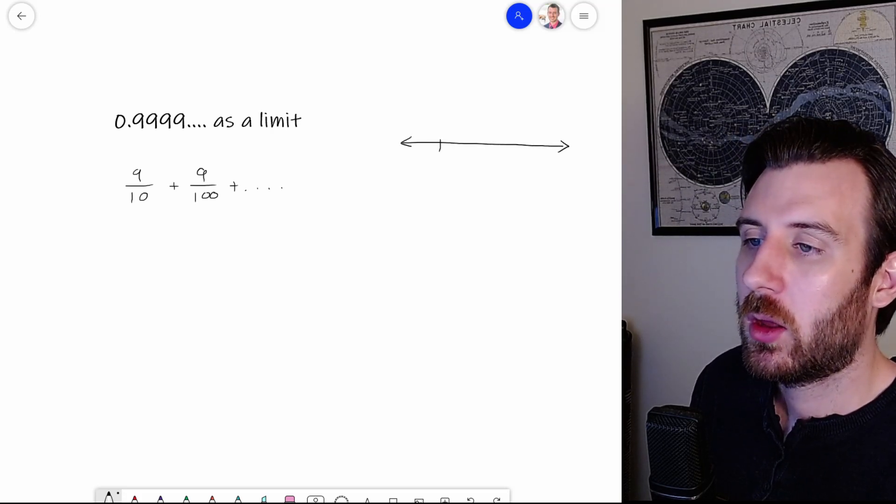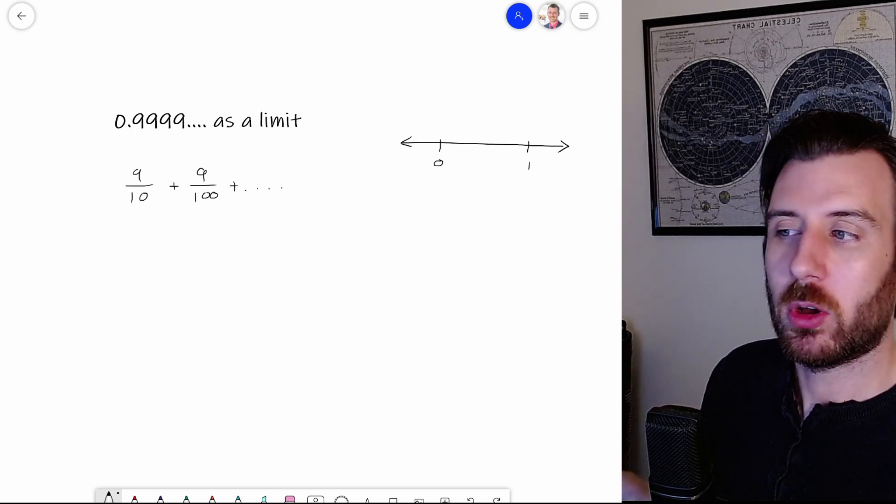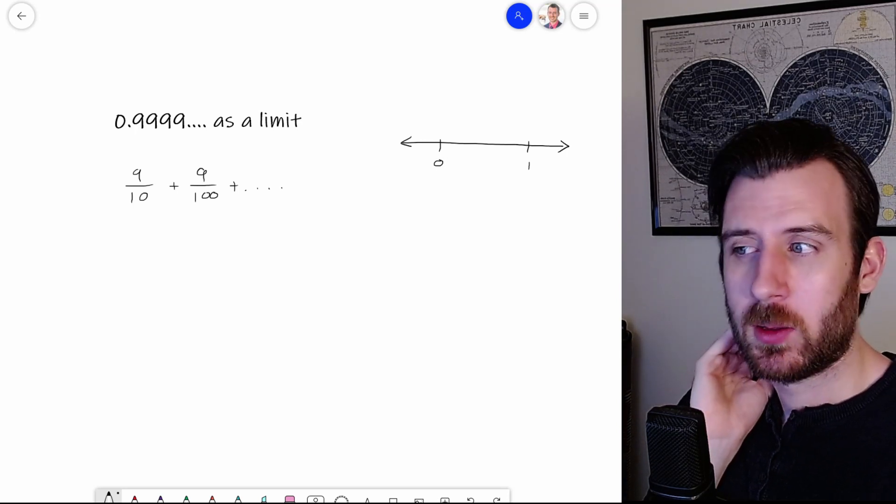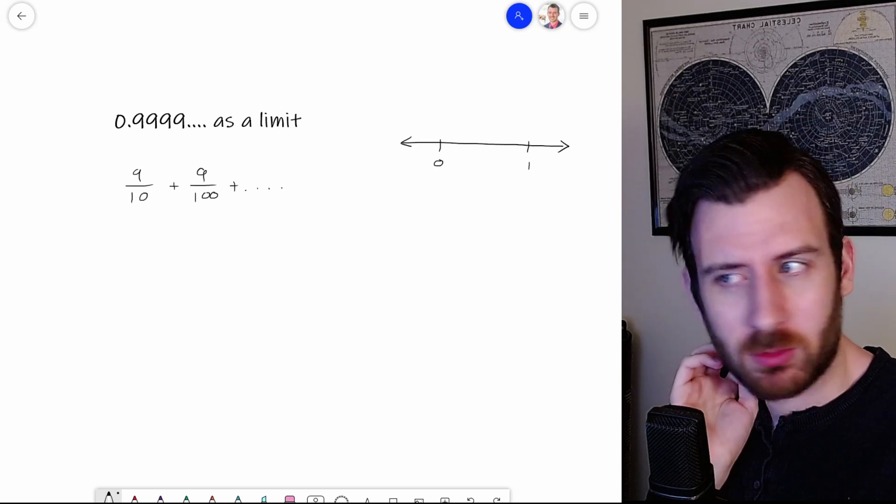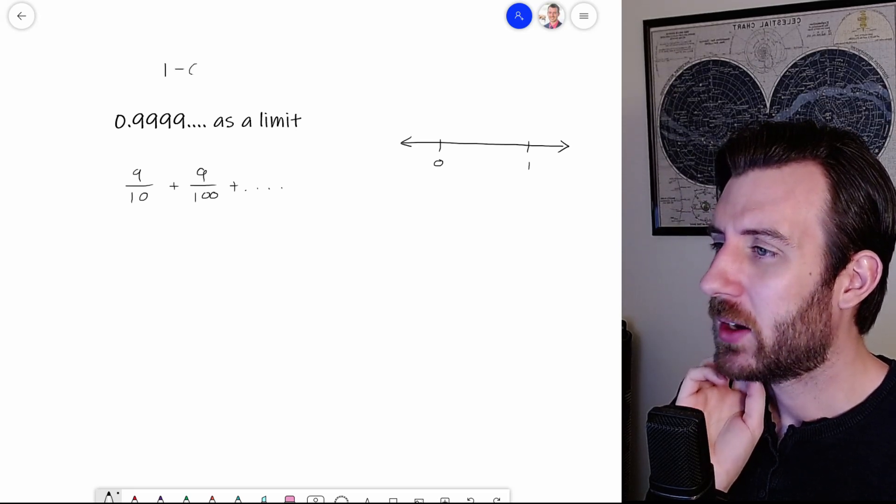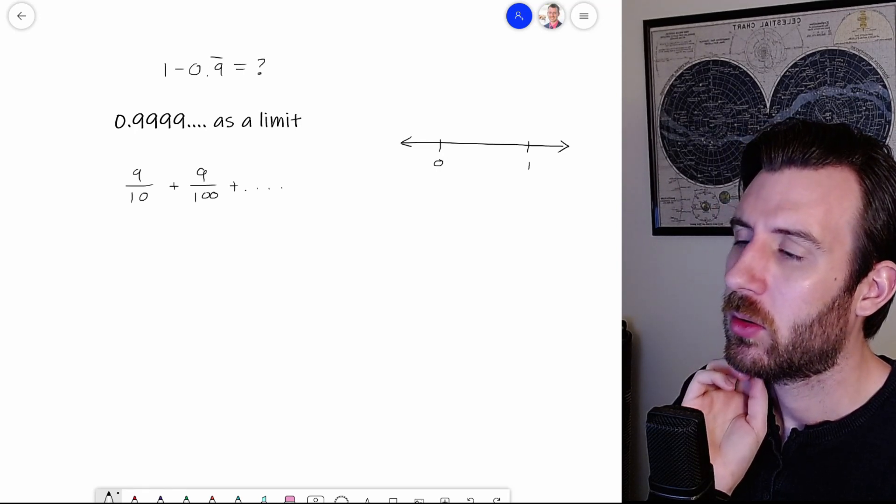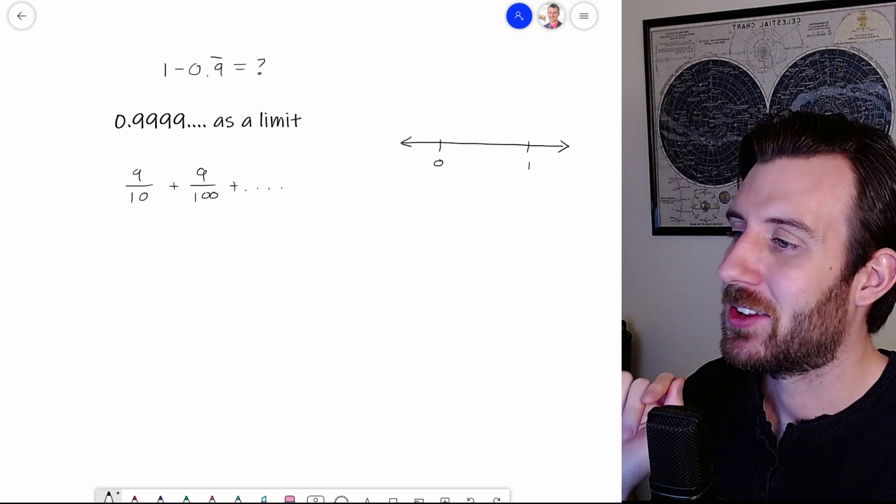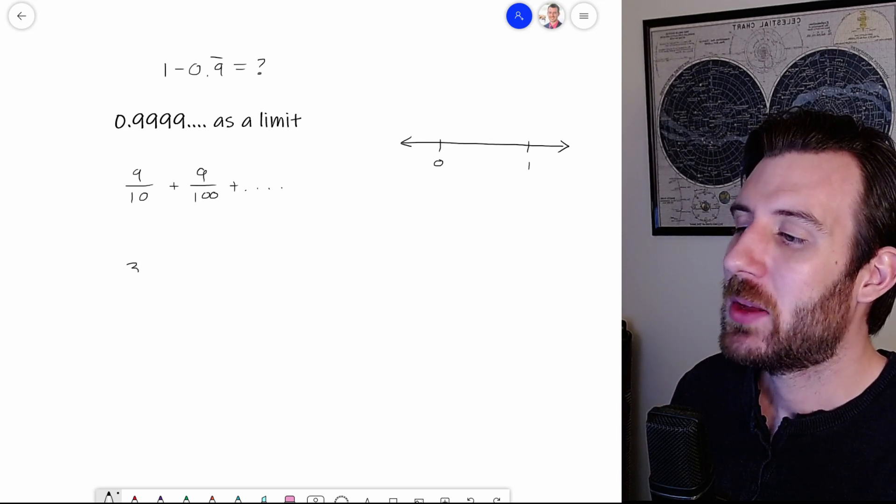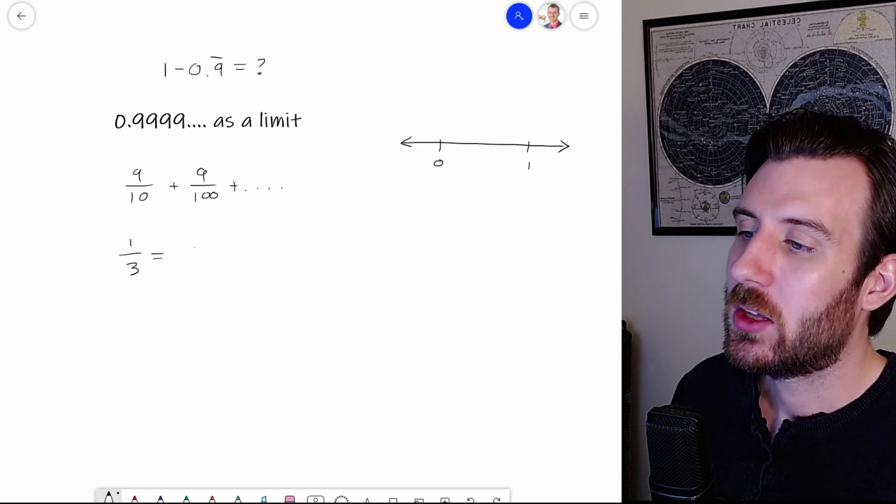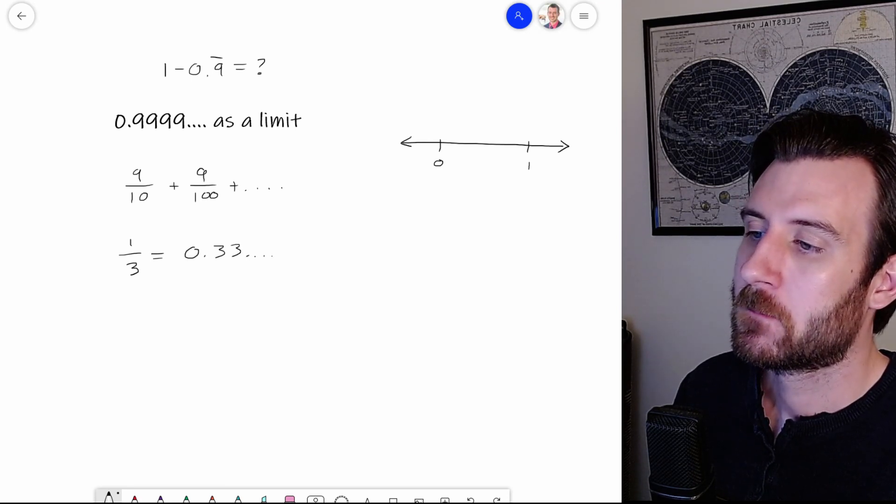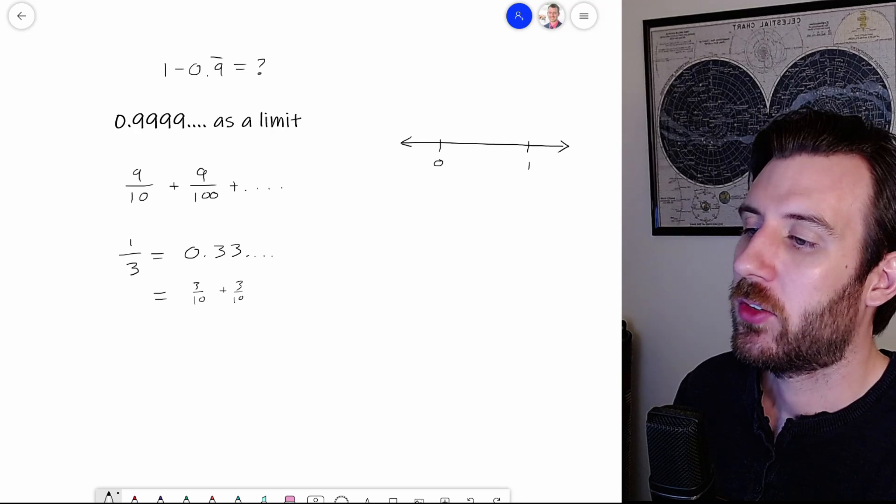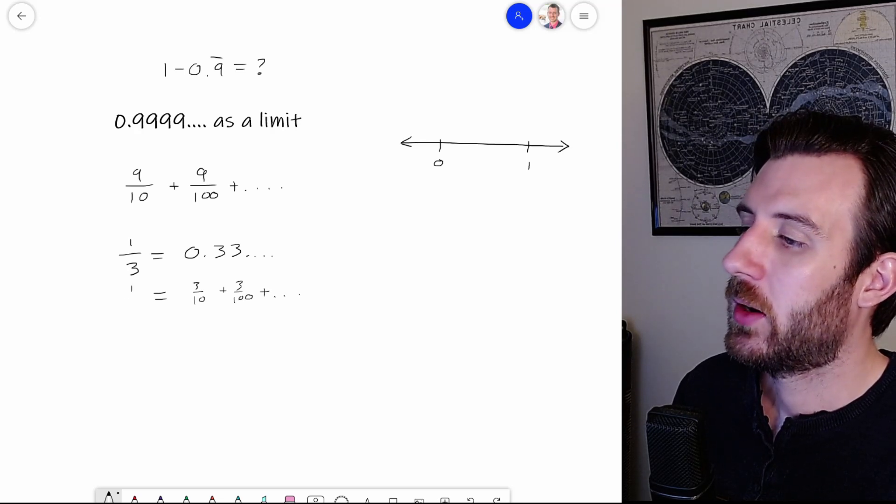Now the question I have for you is where is that number on the number line? So let's draw our number line. I'll put 0 here and 1 here, and I would like to know where to put the dot representing 0.99 repeating. Would I put it right next to 1? What does that mean? How far away from 1 is it? Do we have a number for what 1 minus 0.9 repeating would be? Well, to answer this question in a roundabout way, let me show you a really interesting proof. Most people would agree that if I did 1 divided by 3 that that would be equal to 0.3 repeating. And most people would agree that 0.3 repeating is 3 tenths and 3 hundredths, et cetera.